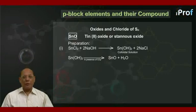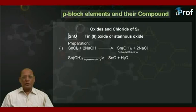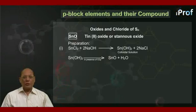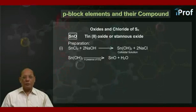Preparation method one: SnCl₂ plus 2NaOH gives Sn(OH)₂ plus 2NaCl. Sn(OH)₂ forms a colloidal solution. When this Sn(OH)₂ is heated in the presence of carbon dioxide, it splits up into SnO plus H₂O.